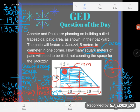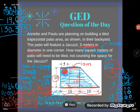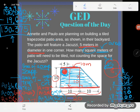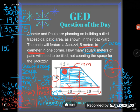In word problems, you should look for rounding directions. The problem asks: how many square meters of patio will need to be tiled, not counting the space for the jacuzzi? No rounding directions given, so I'll use 3.14 as the GED formula sheet instructs. Final answer: 130.375 square meters.